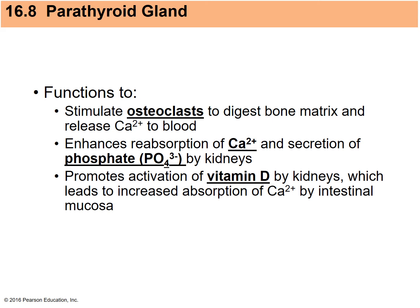Regarding the kidneys: blood is first filtered there — most substances are removed from the blood to start urine formation. Reabsorption is the next step, where the body looks at the precursor urine — containing electrolytes and water — and determines what needs to go back into the blood. Reabsorption means moving substances from the precursor urine back into the blood.